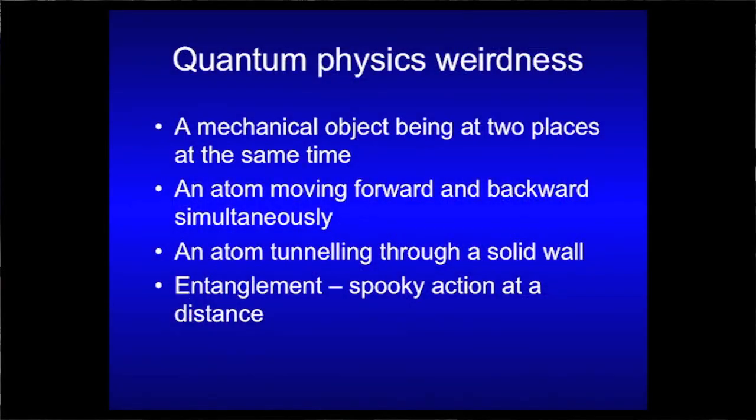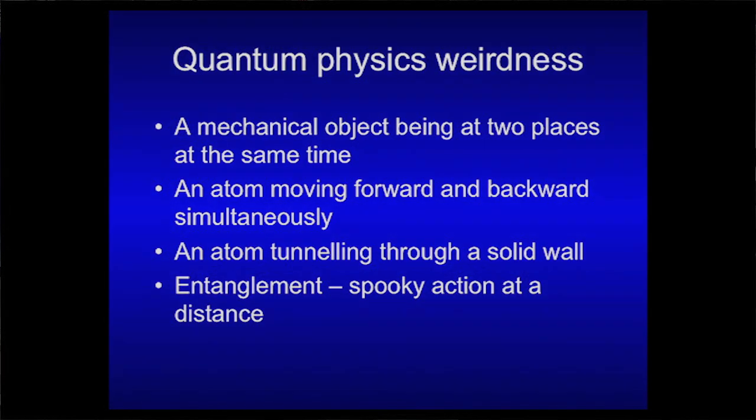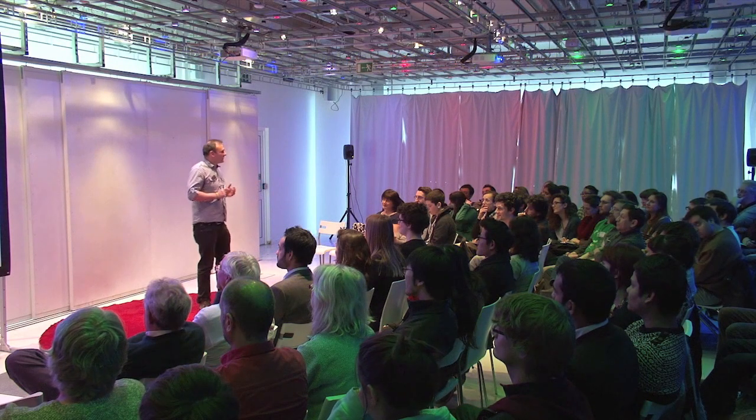So quantum physics is weird, very, very weird. And so there's the strangest things. A mechanical object can be in two different places at the same time. An atom can move forward and backward simultaneously, the same atom.